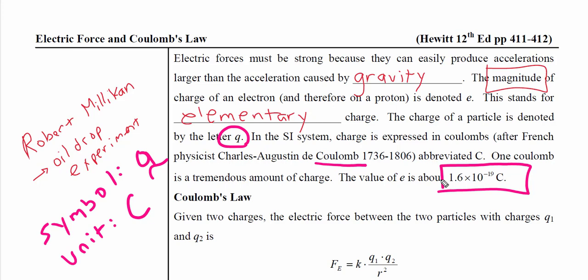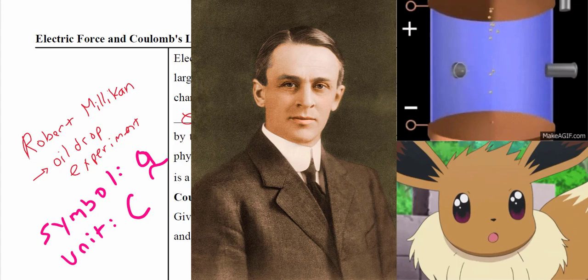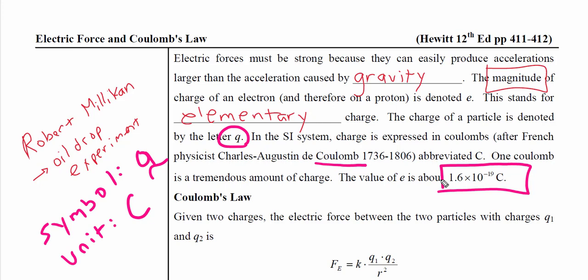The value of an elementary charge is 1.6 times 10 to the negative 19 Coulombs. This is a tiny number. So your cell phone calculators will not help you here. You must have a scientific calculator that can handle these kinds of exponents. For more information about where this number came from, you can look into Robert Millikan. He was a Nobel Prize winning physicist who had an oil drop experiment. If it's a proton, it'll be positive 1.6 times 10 to the negative 19 Coulombs. If it's an electron, the only thing that changes is a negative in the front. We do not change the power of the exponent. That always remains negative 19.